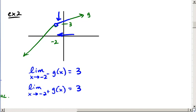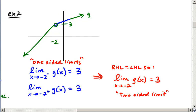All right, and just to finish this off, our one-sided limits are equal. The right-hand limit is equal to the left-hand limit. And so the two-sided limit, the limit as x approaches -2 of g(x), is equal to 3.